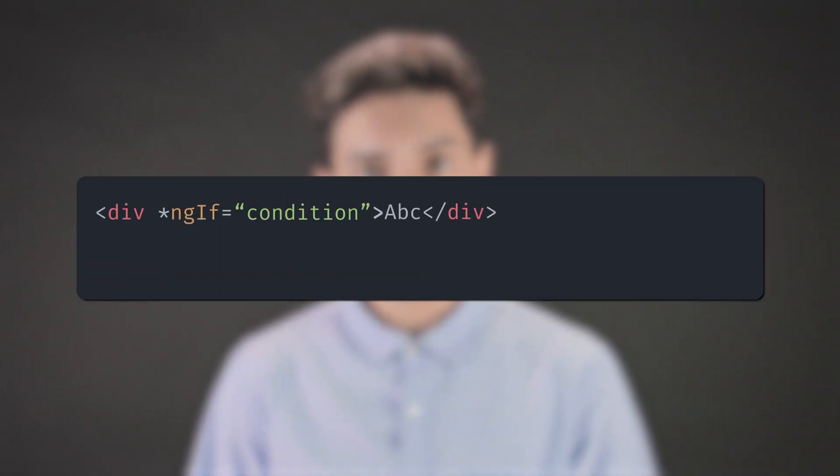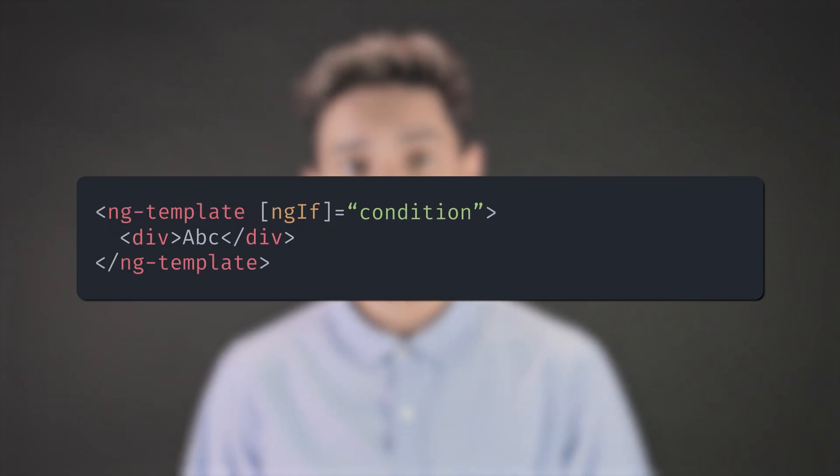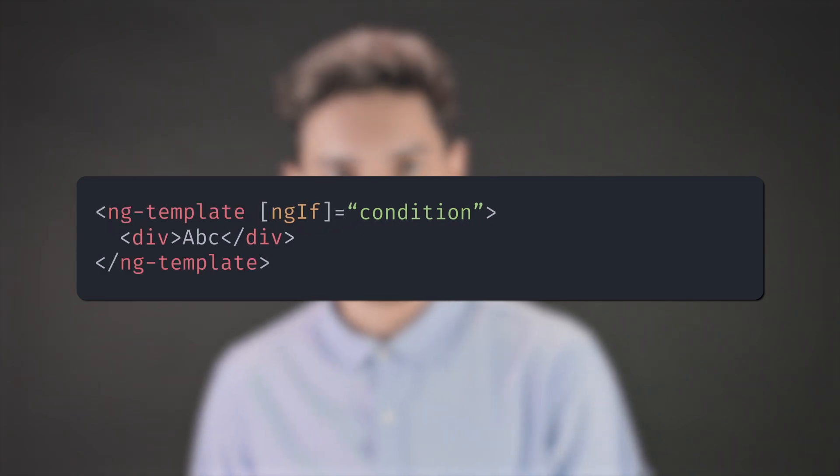A div with star ng-if becomes an ng-template with ng-if containing the div. It's just synthetic sugar. You could write your whole app without the star prefix if you wanted. Knowing how it works, you can now understand why we can only use one structural directive per element.